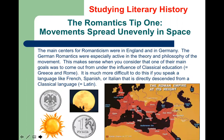Before we go on, let's mention a few tips about studying literary history. I'll give you five basic tips about the Romantics. One thing to keep in mind is that the Romantic movement, like other movements and cultures, spread unevenly in space. As we mentioned in the previous PowerPoint, the main centers for Romanticism were in England and Germany. The German Romantics were especially active in the theory and philosophy of it, but the English Romantics were also quite productive.